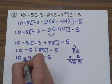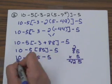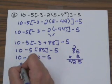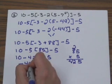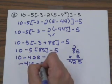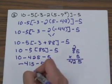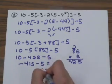Working from left to right, I have 10 minus 425 minus 5. So 10 minus 425 gives me negative 415 minus 5 equals negative 420.